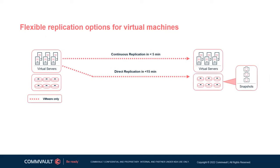When it comes to replication, virtual machines are one of the most common and easily replicated entities within a data center. They are designed with the ability to migrate across hosts and storage. Also, due to being abstracted from the hardware layer, they are well suited to replication technologies. It's important to highlight the overall picture of the multiple tiers involved within Commvault Disaster Recovery's replication solution for virtual machines.